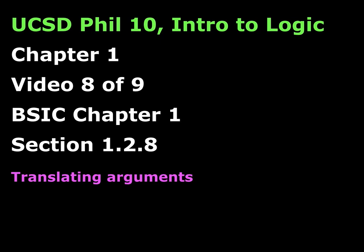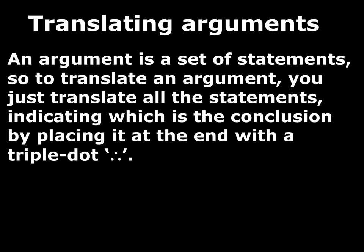The topic here is roughly section 1.2.8 — translating arguments — which is where we've been headed all along, because what we're interested in is assessing arguments. Remember, an argument is a set of statements. So far we've been working on translating the individual statements that will be the premises and conclusion of an argument. That's most of the work. So if you translate the premises and conclusion in formal notation, you've done almost everything. The only thing left is to number the premises and conclusion and put a little triple dot and a line. So really there's not a whole lot that's new here. This will be fairly short — I'm going to walk through two examples of how to do this, but all of the work was done in translating statements.